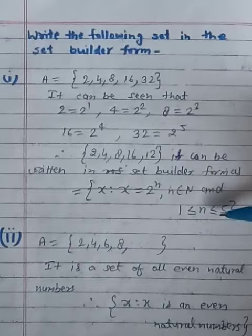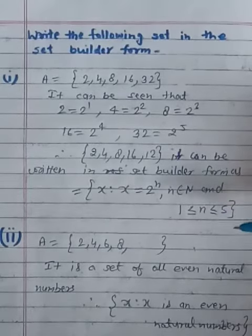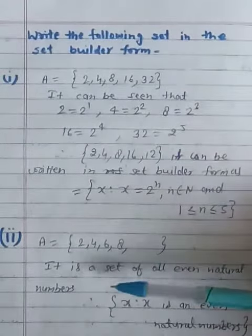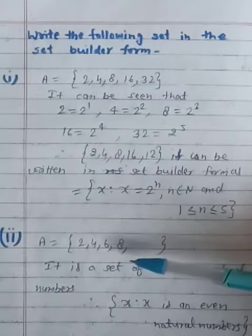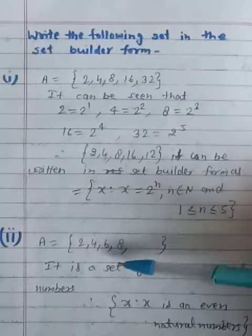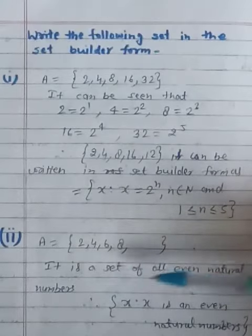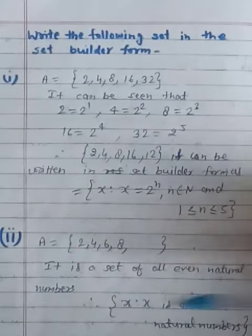And second, given that A is equal to 2, 4, 6, 8, etc. It is a set of all even natural numbers.